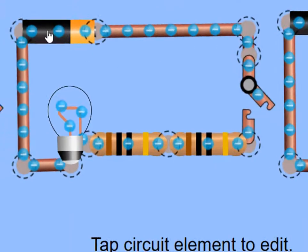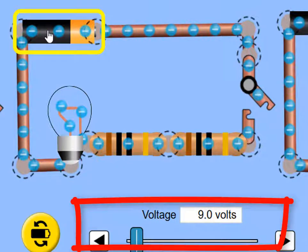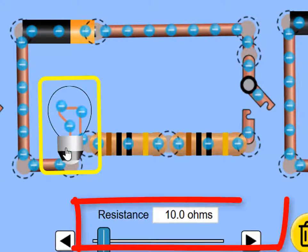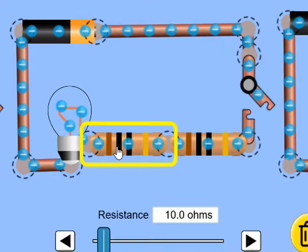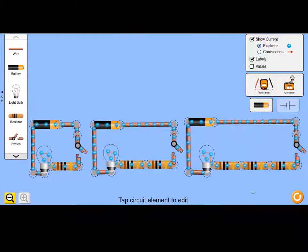Let's go to our simulation and check that this is the case. When I click on the battery, you can see that its properties show 9 volts. When I click on the bulb, you can see its properties — 10 ohms. And that resistor there is 10 ohms resistance as well, and that one also 10 ohms. I can do that for all of the circuit elements and you would see that it's the same for all.